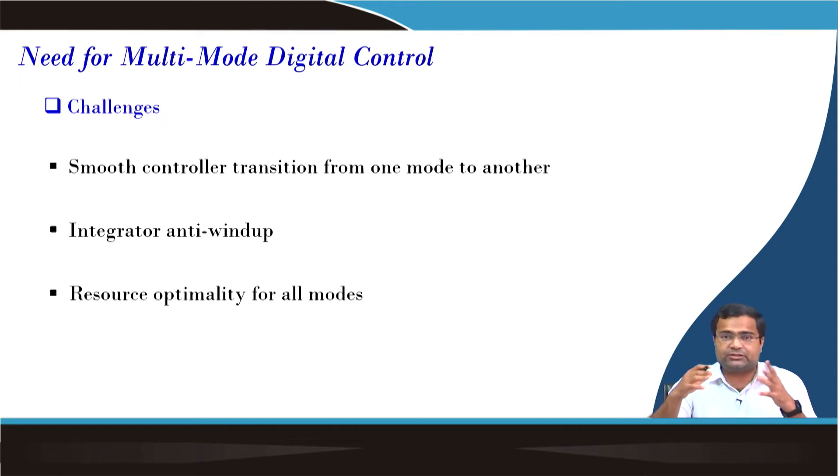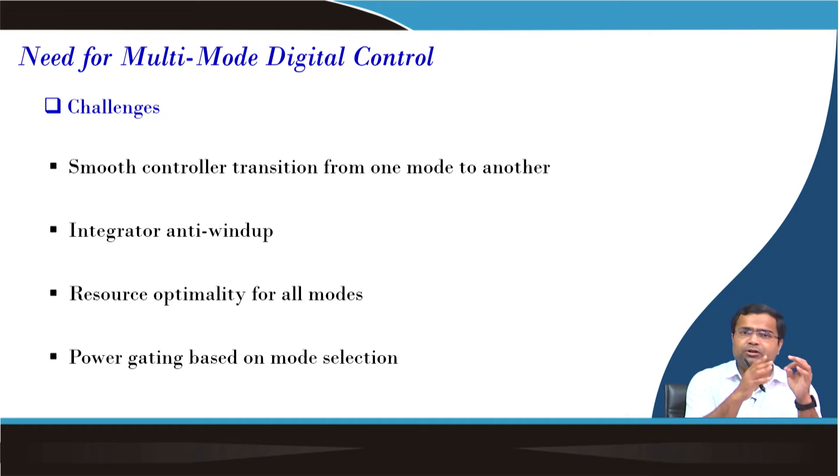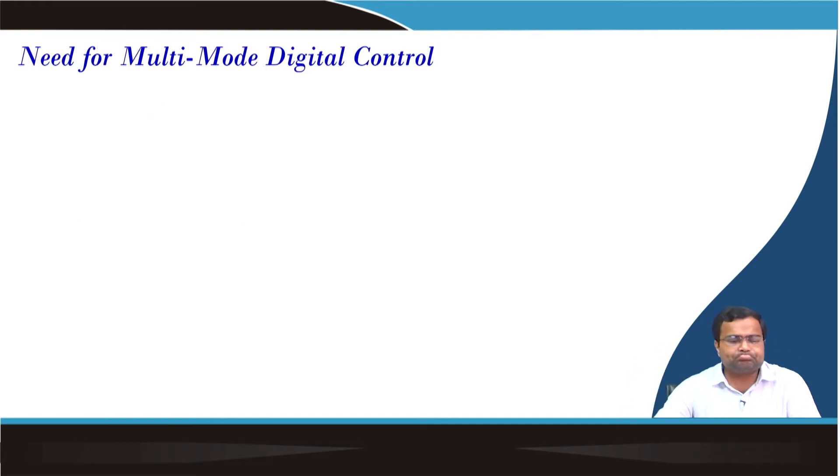Then we need to optimize the resources, because if there are two or three controllers and each controller requires dedicated resources, then the resource requirement will go up and that may require more silicon area, more power consumption, more cost. So you need to keep in mind the resource constraint. And finally, we can do power gating. Suppose if you are using PWM and PSM, if you are operating at a light load condition when the power output is already low, we need to save battery power. So that time we should not burn power, we should not activate the PWM mode, it should be disabled. This power gating is possible based on mode selection.